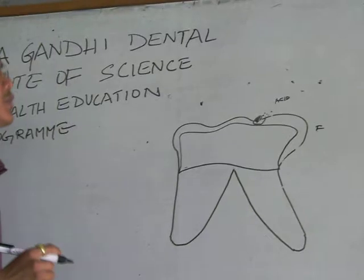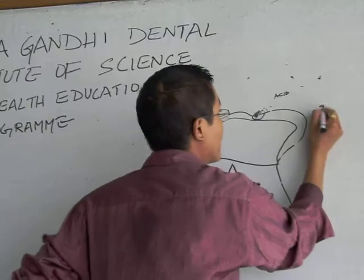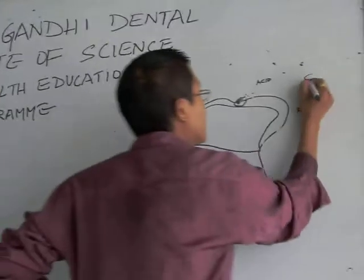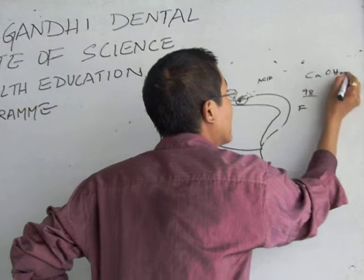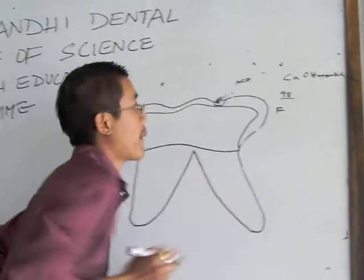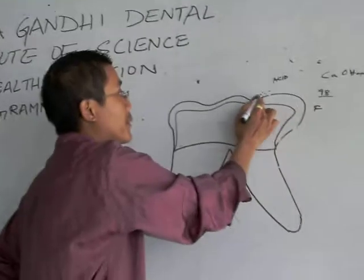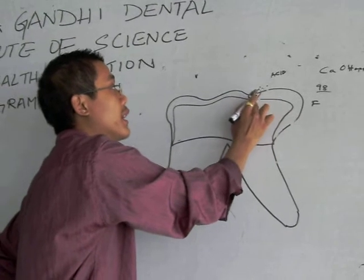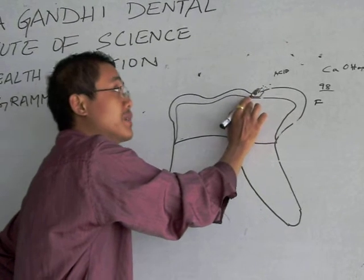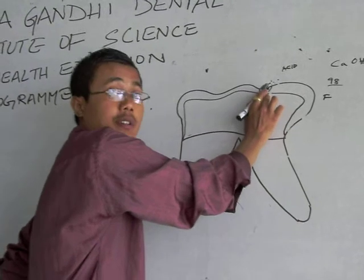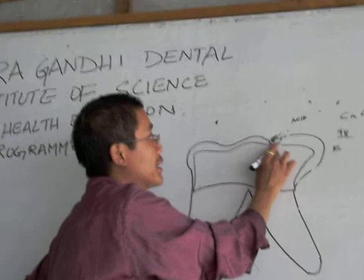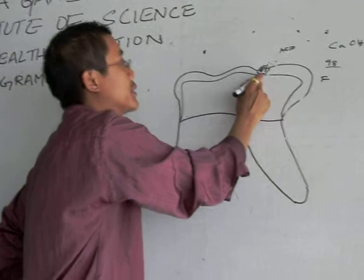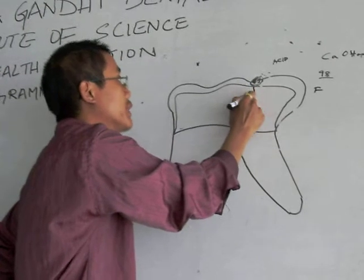This acid will react with the enamel. After the formation of the tooth, it consists of nearly 98% minerals — that is calcium hydroxyapatite. Because of the acid produced during the fermentation of the food debris, the bacteria will cause the demineralization of this enamel. This enamel will be demineralized, and this soft tissue will also be decomposed by the bacteria.